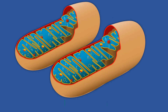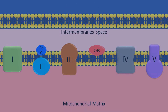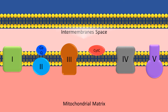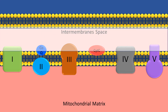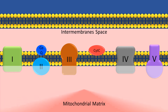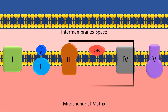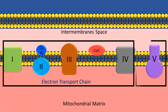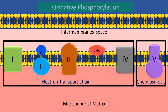Oxidative phosphorylation comprises the electron transport chain and chemiosmosis, which occur in the mitochondria — specifically in the inner membrane, the inner membrane space (which is the space between the inner and outer membrane), and the mitochondrial matrix. Along this inner mitochondrial membrane are presented a series of complexes, numbered from 1 to 5. The latter complex is also known as ATP synthase.